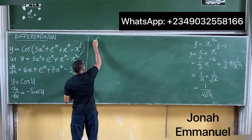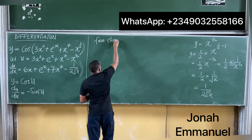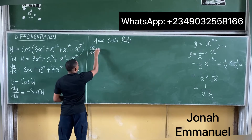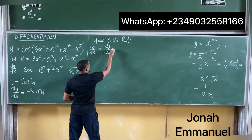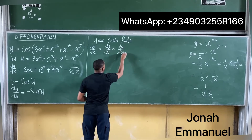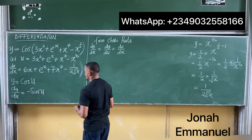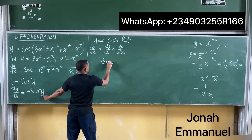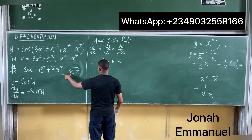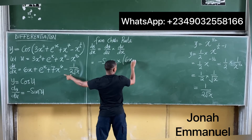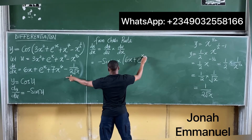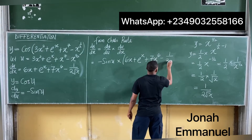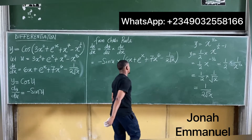From the chain rule, dy over dx equals dy over du times du over dx. That equals negative sin u, multiplied by du over dx, which is 6x plus exponential x plus 7x to the power 6 minus 1 over 2 root x.